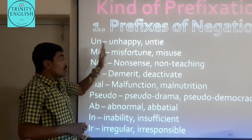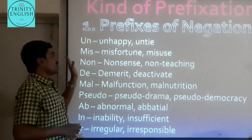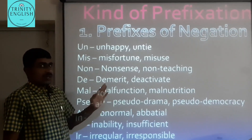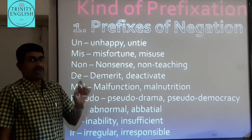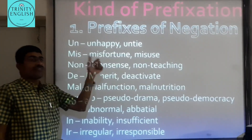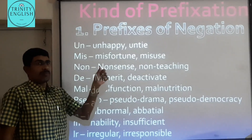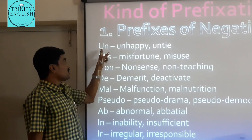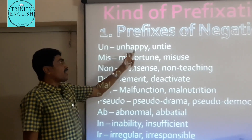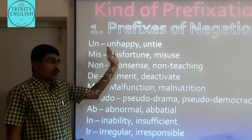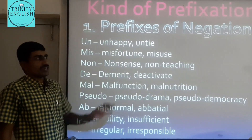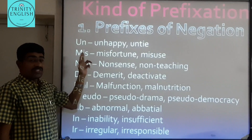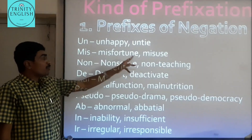All these pre-additions are prefixes. The simple meaning of prefix is 'to fix before' — 'pre' means before. For example, 'un-' gives us 'unhappy' and 'untried.' The prefix 'mis-' gives us 'misuse' and 'misculture.'